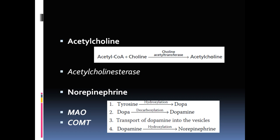Acetylcholine is stored in vesicles. When an action potential arrives, voltage-gated calcium channels open, calcium ions enter, and this initiates fusion of vesicles with the presynaptic membrane, releasing the neurotransmitter. After release, acetylcholine acts for a few seconds and is then degraded by the enzyme acetylcholinesterase. This enzyme is pharmacologically important for increasing or decreasing the action of acetylcholine in the parasympathetic autonomic nervous system.